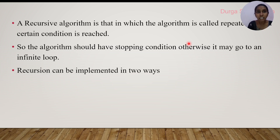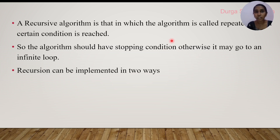A recursive algorithm is one in which the function is called repeatedly until a certain condition is reached. The function calling itself until the condition is reached is known as a recursive algorithm. The algorithm must have a stopping condition; otherwise it will execute an infinite number of times. Recursion can be implemented in two ways: direct recursion and indirect recursion.